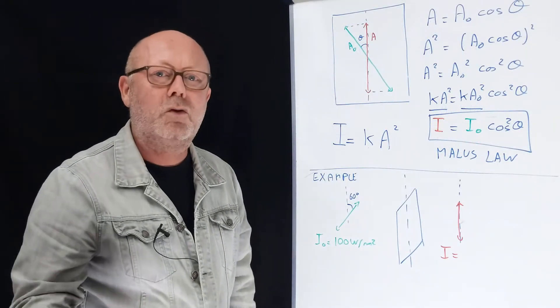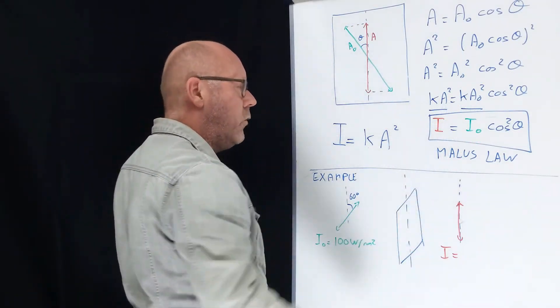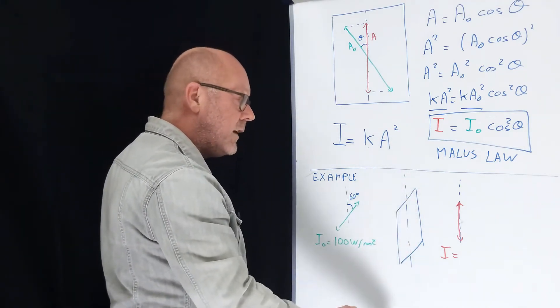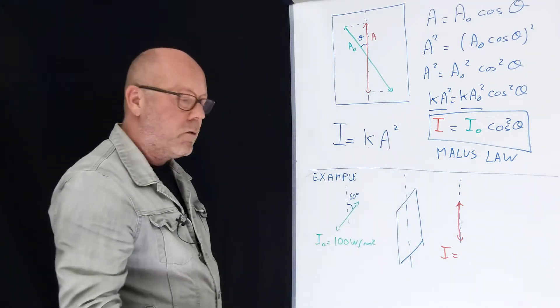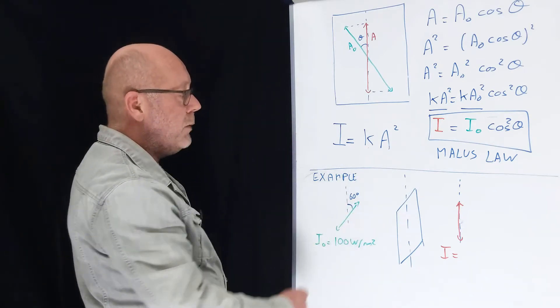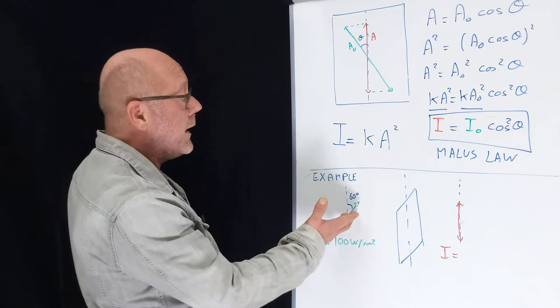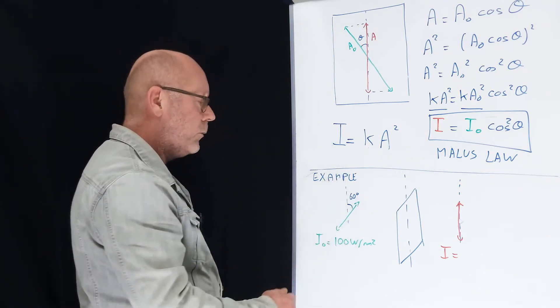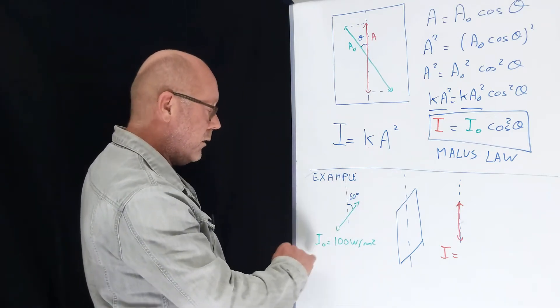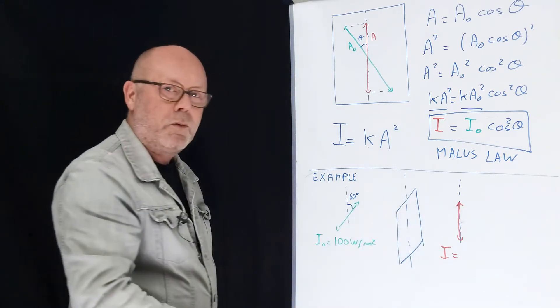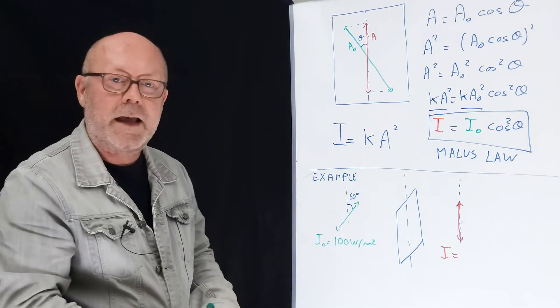Let's do a quick exercise for you to get a feel on how to use Malus's law. You have a polarizer here which has an axis of polarization which is the vertical. You have an incident beam of polarized light for which the plane of polarization is making an angle of 60 degrees with vertical. The incident intensity is 100 watts per meter square. What is the intensity of the light that comes out of the polarizer?